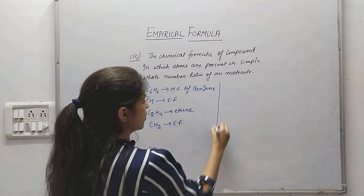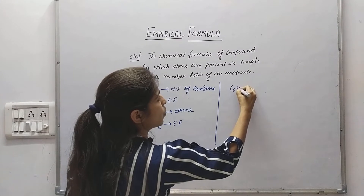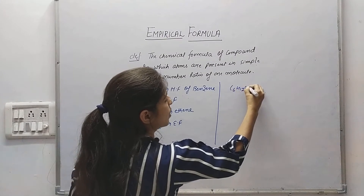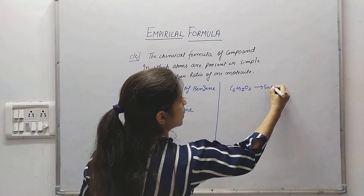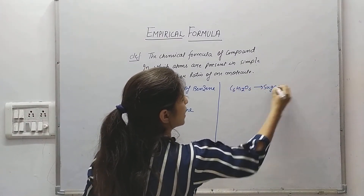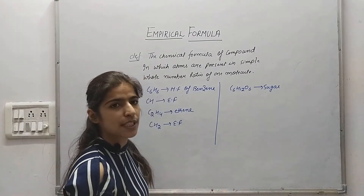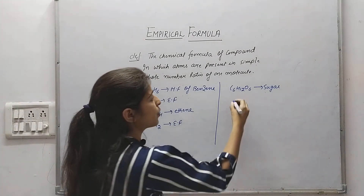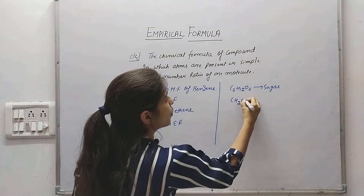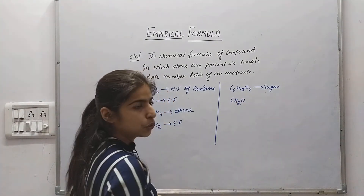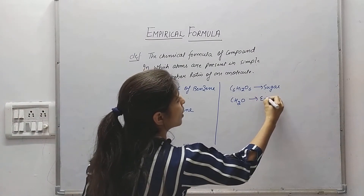Another one: C6H12O6, the formula of sugar. Whatever number of atoms, divided by a factor of 6, and we will get CH2O. It is the empirical formula.